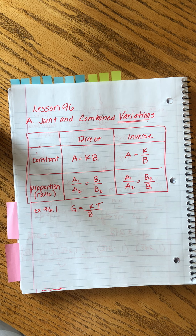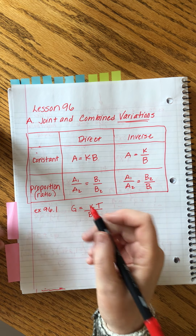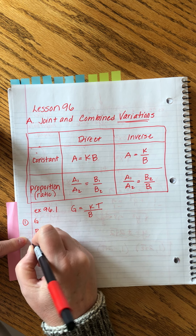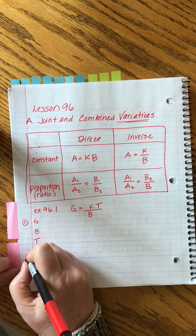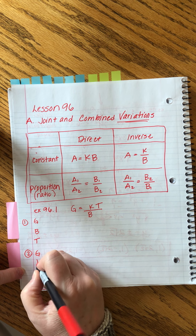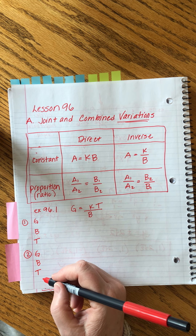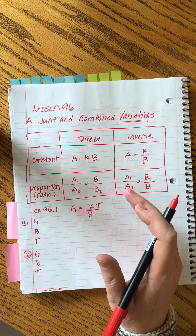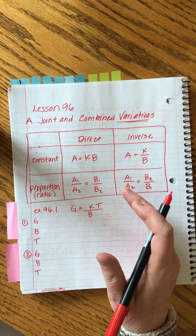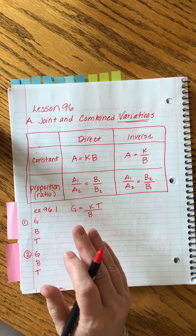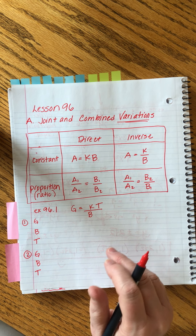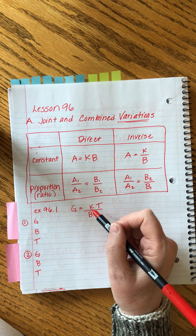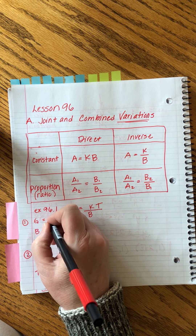John calls this the ratio method — same difference. He shows how to work problems in both formats. I'll use the constant method for one problem and the ratio method for the other. What we're doing in these problems is combining things — dealing with more complicated situations.